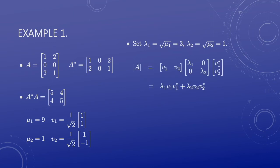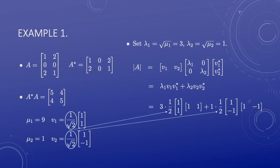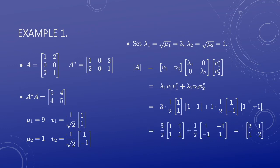Then the polar of A has the following spectral decomposition. Insert lambda 1, lambda 2, V1, and V2. Because the eigenvectors are normalized by the constant 1 over square root of 2, in each of the rank-1 projections there is a constant 1 half. Then the polar of A is the 2 by 2 matrix: 2, 1, 1, 2. It is positive and self-adjoint.